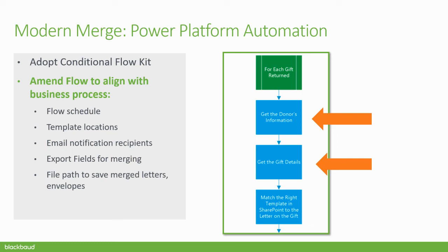You are also amending the export fields. The kit reflects some general information: the donor name, contact information, and general gift details such as the gift amount, the gift date, and the fund. If your organization incorporates additional information, you would want to amend those portions of the outputs. From there, you define the file path for where the merge letters should reside.